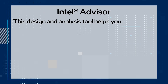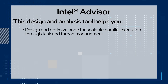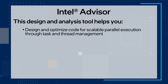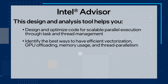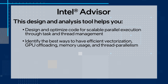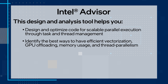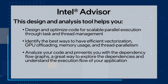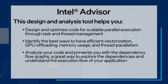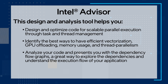This design and analysis tool helps you design and optimize code for scalable parallel execution through task and thread management, helps identify the best ways to have efficient vectorization, GPU offloading, memory usage, and thread parallelism. It analyzes your code and presents you with dependency flow graphs, which are a great way to explore the dependencies and understand the execution flow of your application.